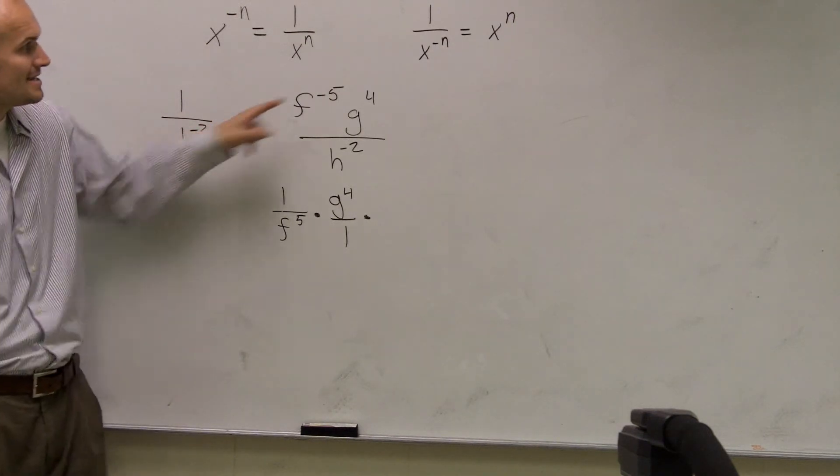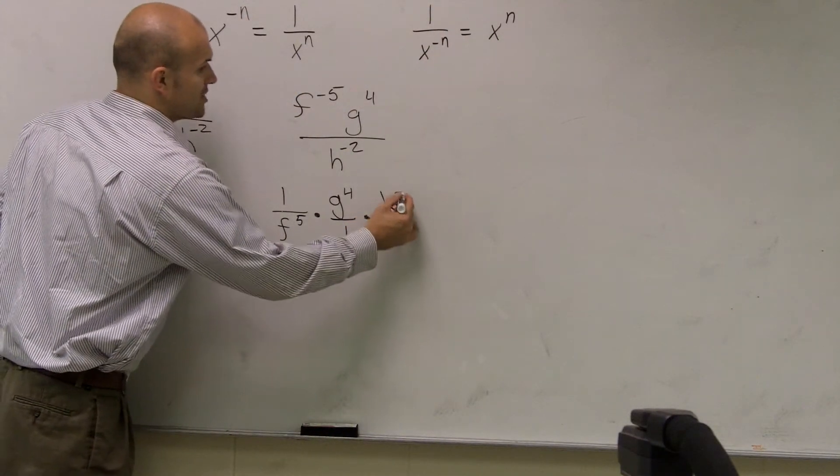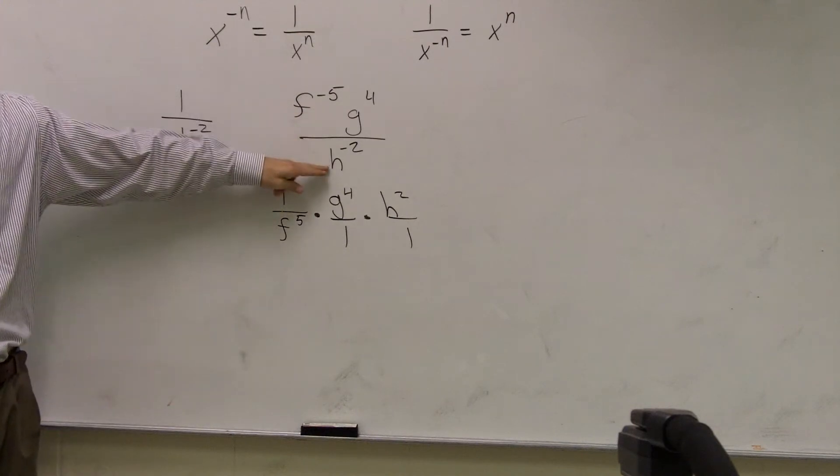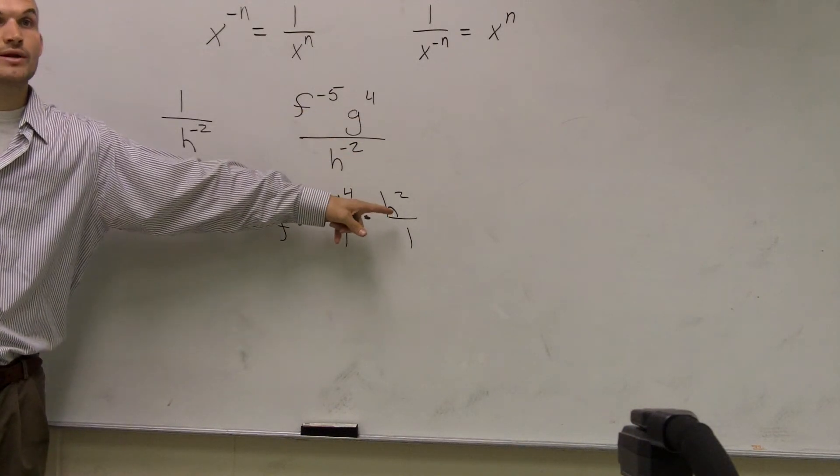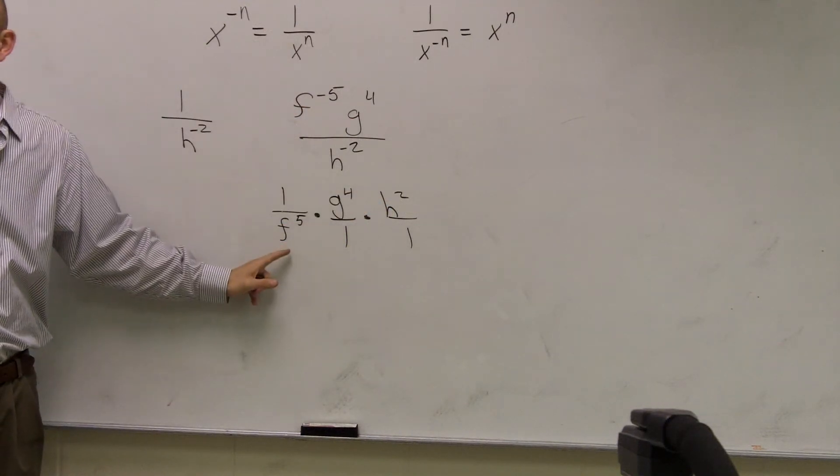So if I want to make this positive, I have to put it as the numerator. So now that's going to become h to the positive squared over 1. Does everybody see what I did? When you have it as a denominator and it's negative, to make it positive, you put it in the numerator. When you have it in the numerator and it's negative, to make it positive, you put it in the denominator.